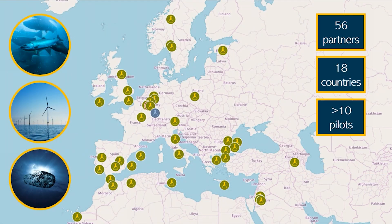In ILIAD, 56 partners from 18 countries will work together on topics like water quality, offshore wind, aquaculture and many more. The digital twins in ILIAD, also called pilots, will leverage a variety of sensors, data, models and infrastructure and demonstrate a digital twin of an ocean area.